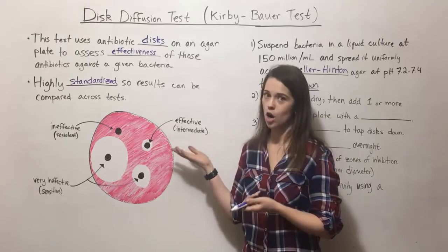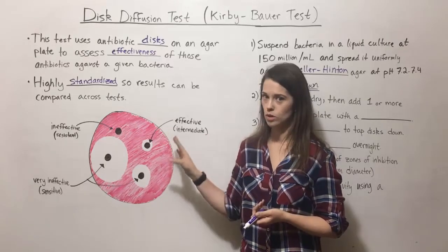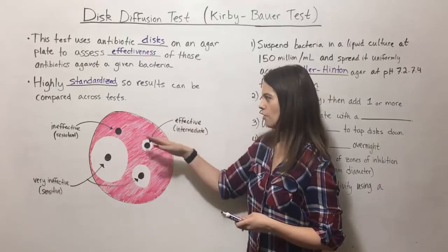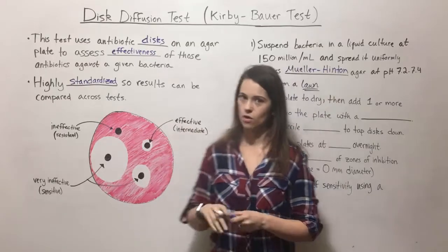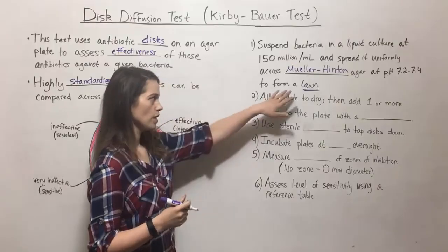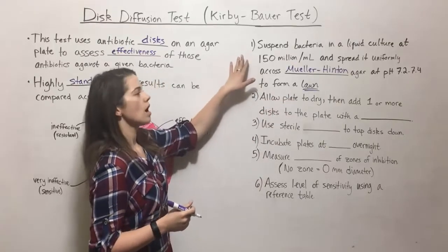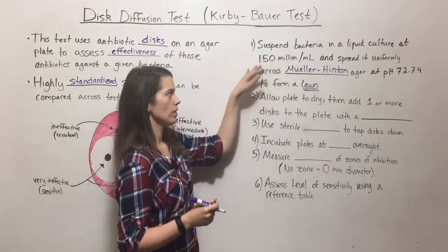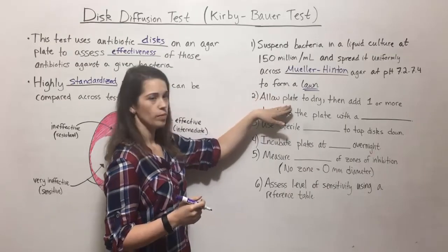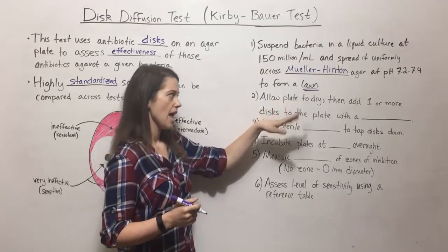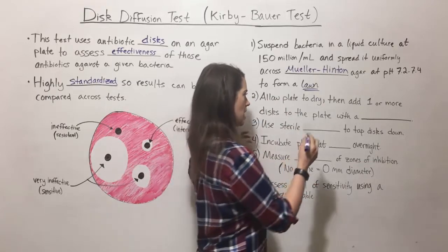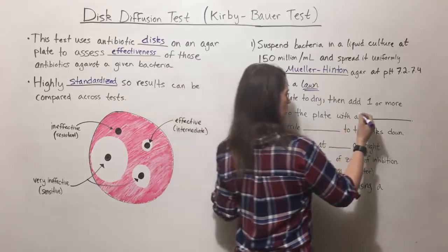You can see there are no individual colonies — distinct little dots — rather the bacteria have all grown right up against each other. That is the lawn. You inoculate the Mueller-Hinton agar with the cells at this concentration, allow the plate to dry, and then add one or more discs to the plate with a dispenser.